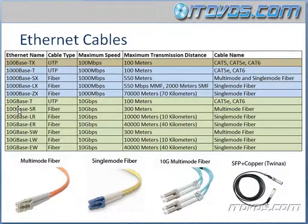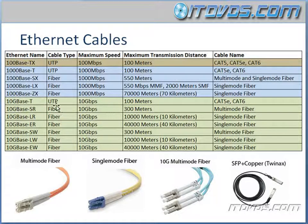Now let's talk about 10 gigabits per second speed. We can use 10GBaseT. This is going to use a UTP cable. Maximum distance: 100 meters. This is going to be a Cat5E or Cat6 cable.